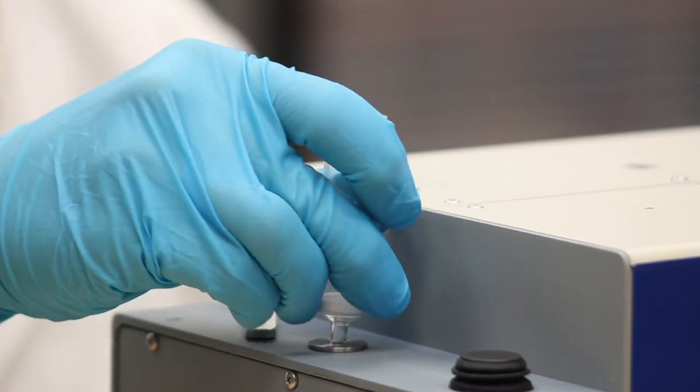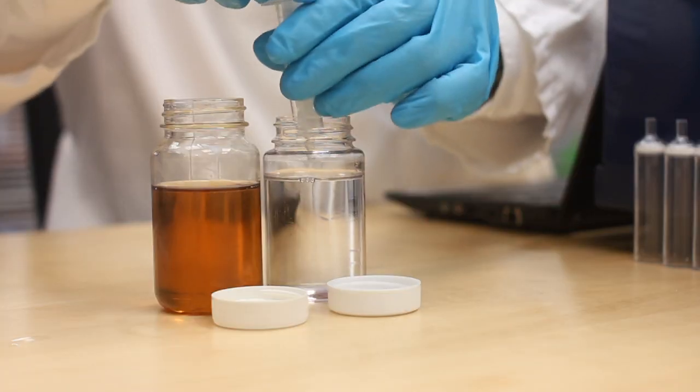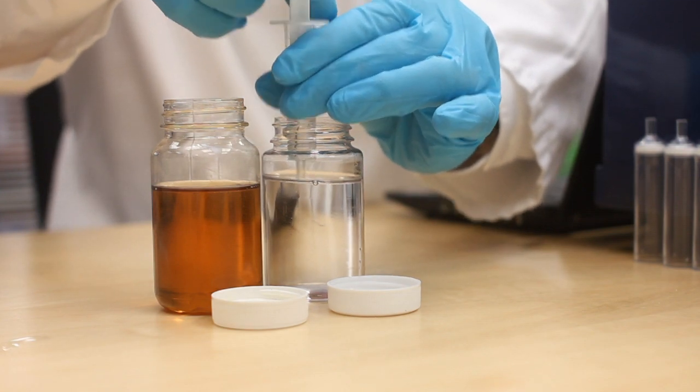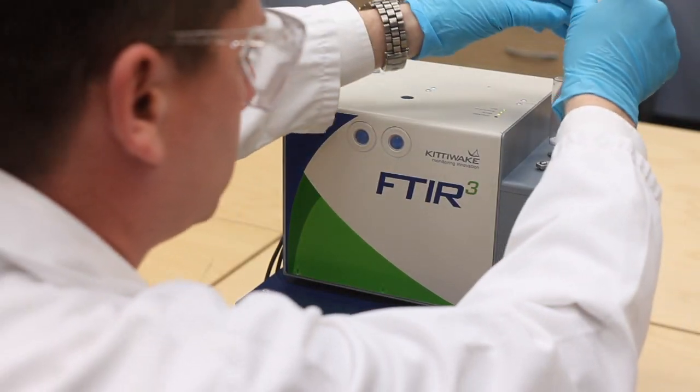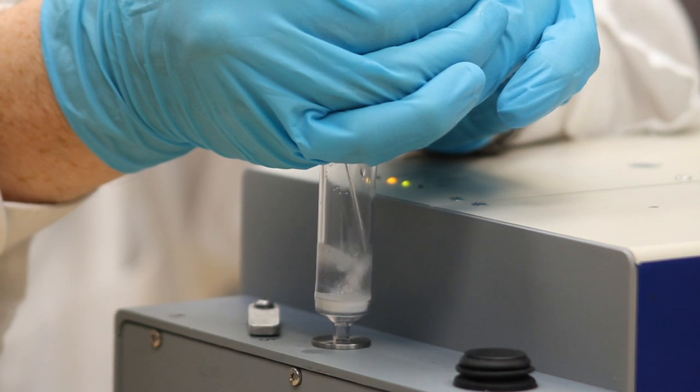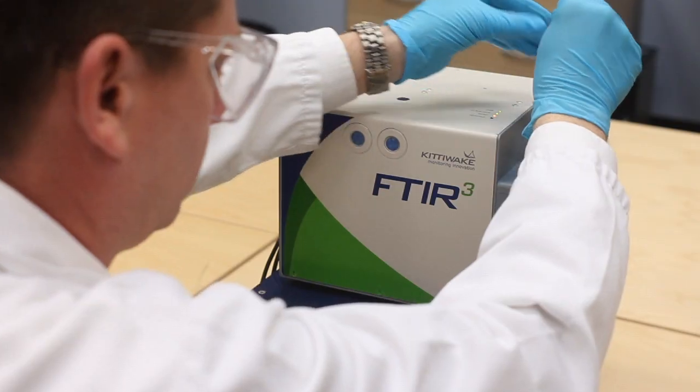A clean sample tube is placed into the FTIR Cubed. A small sample of cleaning fluid, for example kerosene or mineral lamp oil, is then used to flush the oil sample through and clean the measurement cell.